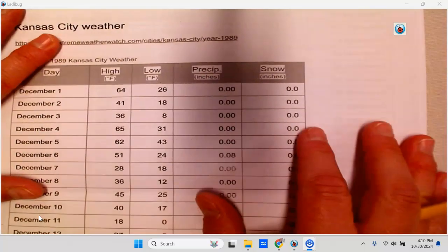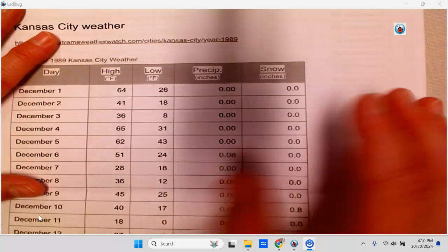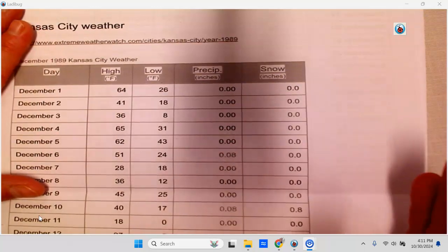Now I have this Kansas City paper, so I have 31 low temperatures. Some of you might have 30, some of you may have 29, maybe 28, but in this one, this is for December, so there's 31 temperatures.